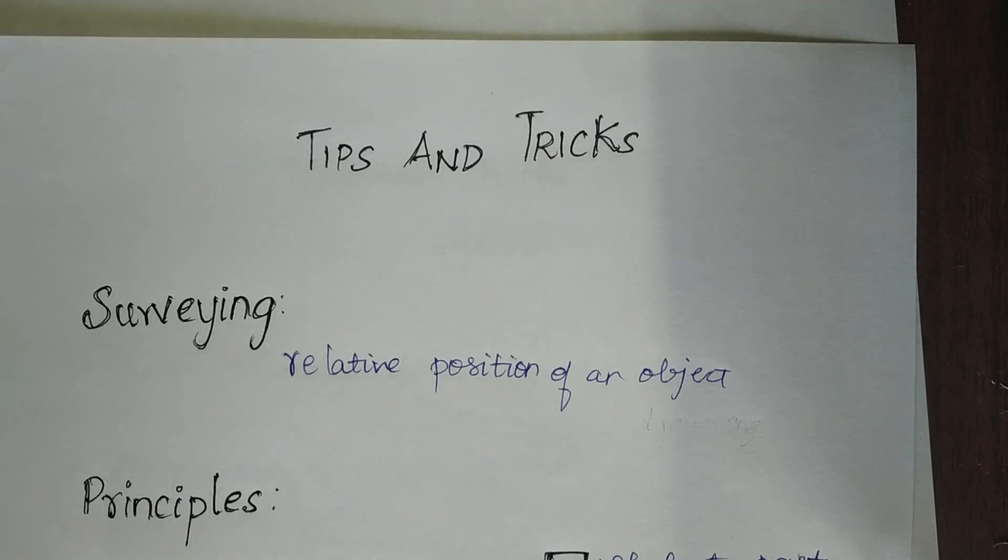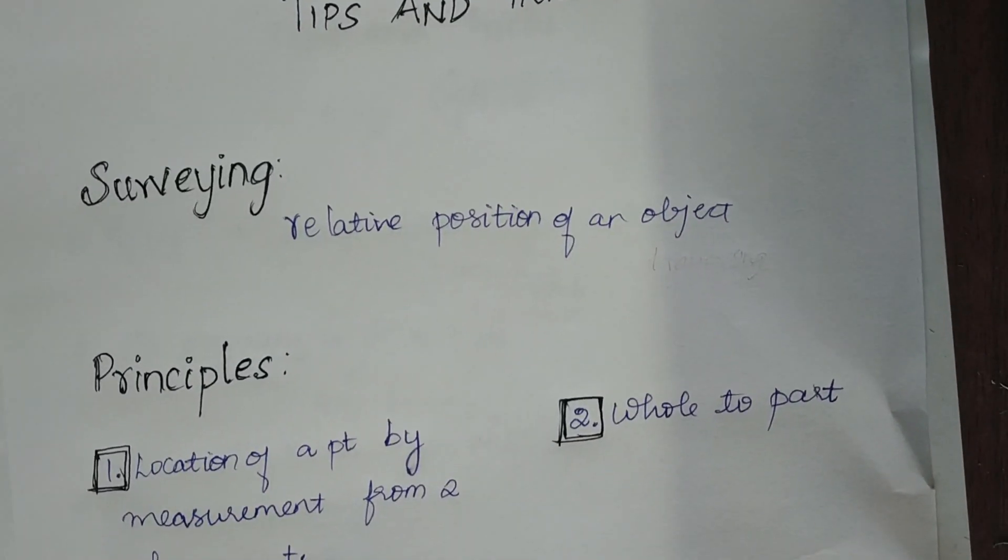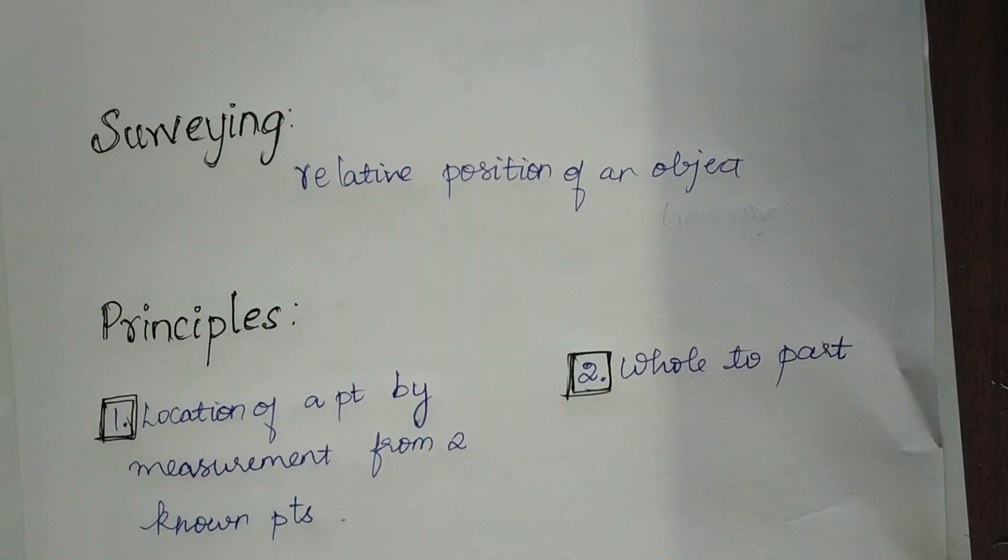Jumping into the principles of surveying, we have two main principles. The first one is location of a point by measurement from two known points, and the second one is working from whole to part.